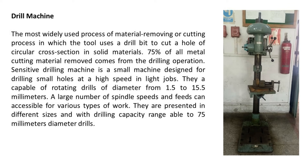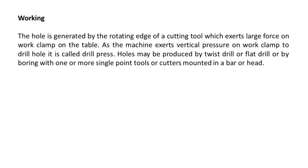A large number of spindle speeds and feeds can be accessible for various types of work. They are presented in different sizes with drilling capacity up to 75 millimeters diameter drills. Working: the hole is generated by the rotating edge of a cutting tool, which exerts large force on the work clamped on the table. As the machine exerts vertical pressure on the work to drill the hole, it is called a drill press. Holes may be produced by twist drill, flat drill, or by boring with single point tools or cutters mounted in a bar or head.